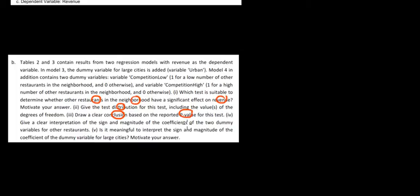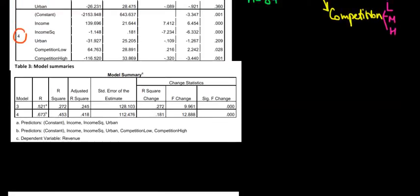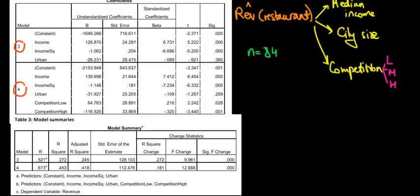We also need to find the sign and magnitude of the dummy variables, including the coefficient for the dummy variable for large cities. First, we have to understand what we're testing with the dummy variables. If we compare Model 3 with Model 4 — in Model 3 we are regressing revenue based on median income, the squared effect of median income, and a dummy variable for whether the restaurant is in an urban or big city.